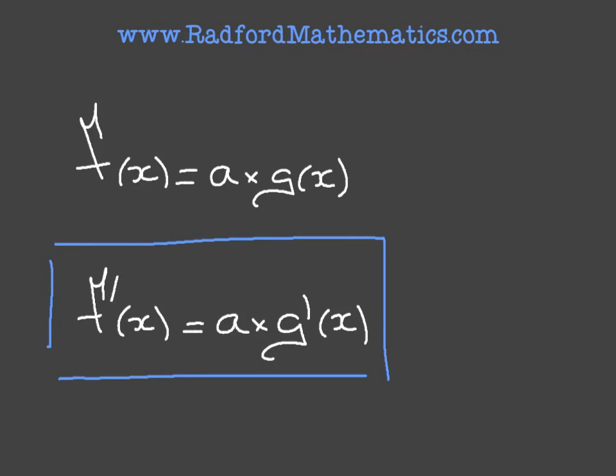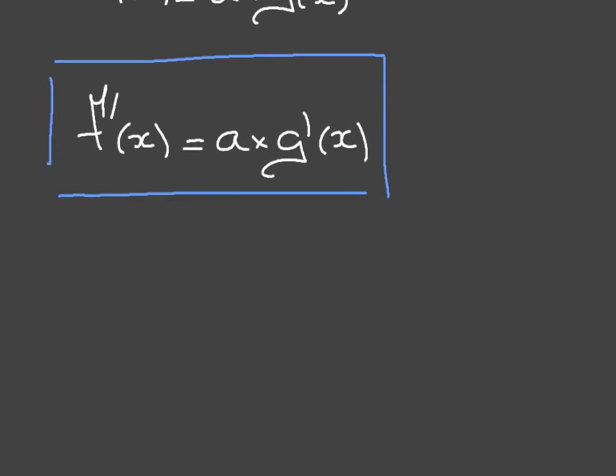So how do we use this? Let's actually look at a couple of examples here. Let's say that we have f of x equal to 3x squared. Well, comparing this to what we saw previously, in this case, the number which is multiplying the function is 3, so I could write a is equal to 3, and the function g of x would be x squared, just to compare it to our formula.